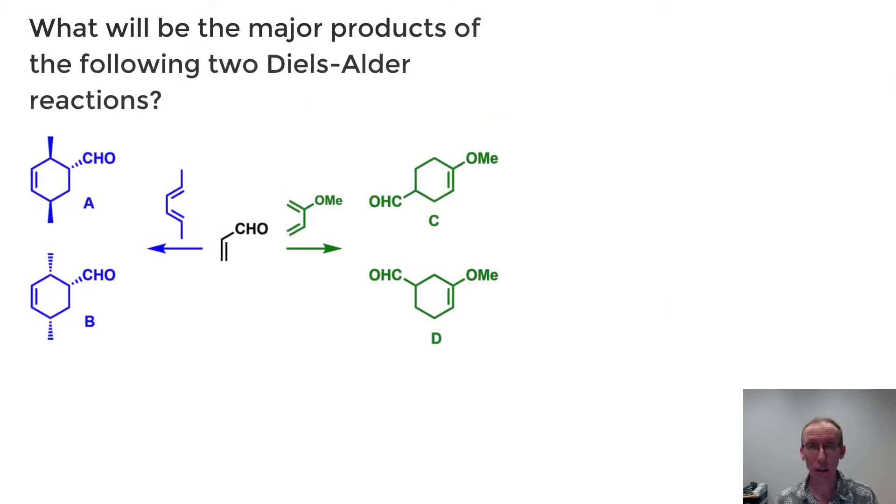Okay, so this question is asking about two different Diels-Alder reactions. The first is taking acrolein, this aldehyde substituted dienophile, and 1,4-dimethylbutadiene and react them together to give either A or B. If we look at the structure of the diene, it can interact with the dienophile with the aldehyde poking out like that. And in that arrangement, this hydrogen here and that aldehyde will end up on the same side. And so this particular arrangement will lead to the trans product.